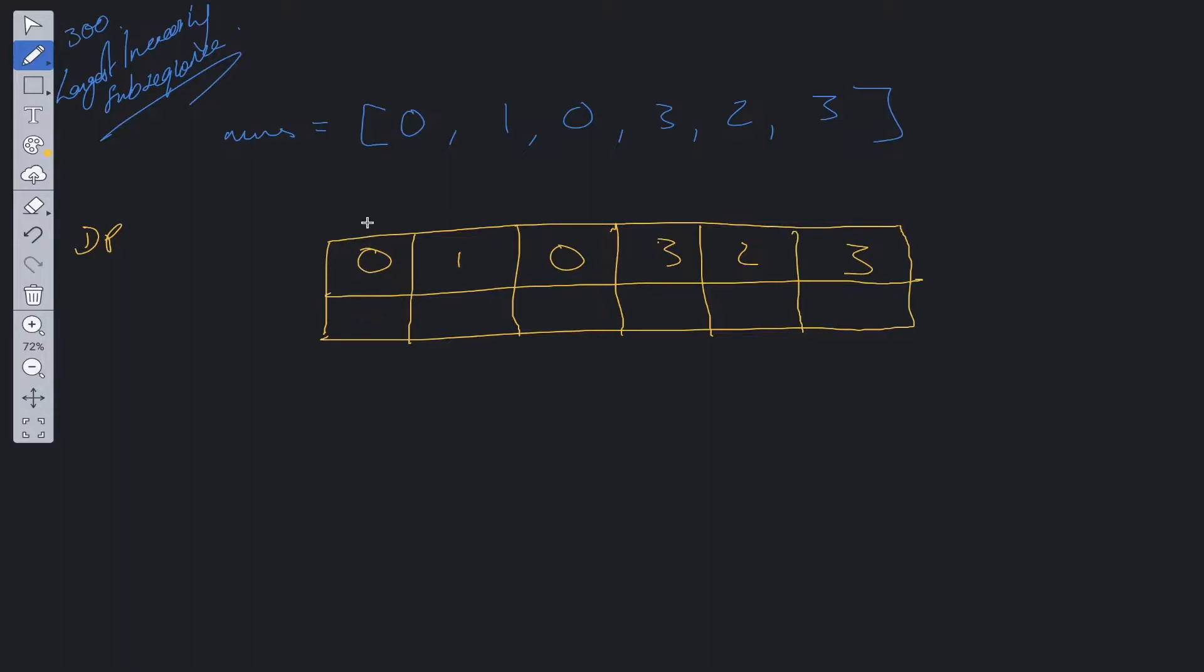If we're at position 0, what is the subsequence we can achieve at this point? Well it's going to be 1, right? Because this is of length 1.